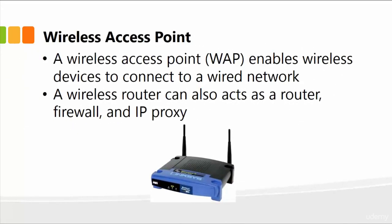This is what the wireless access point looks like. It simply enables wireless devices to connect to a wired network. The wireless router routes data and information from one computer to another, and can also act as a router, firewall, or IP proxy. A firewall is simply the security layer for your data, ensuring it gets transmitted and reaches the defined destination.